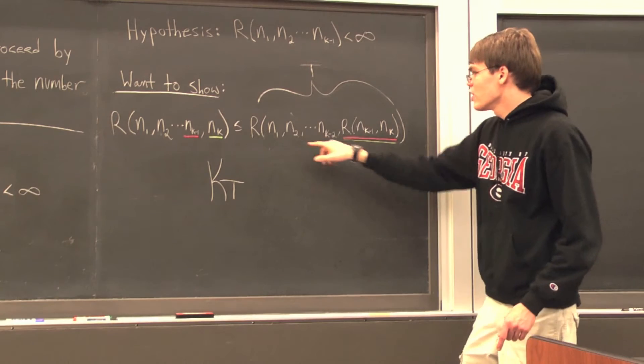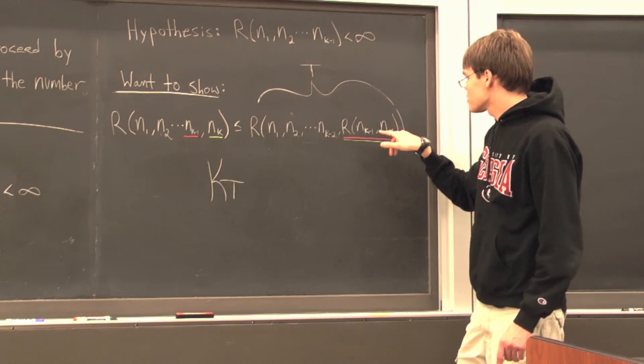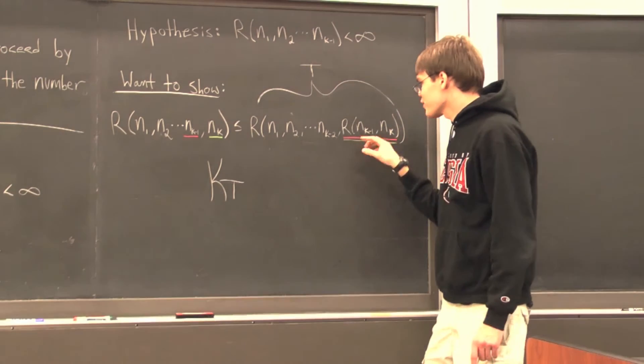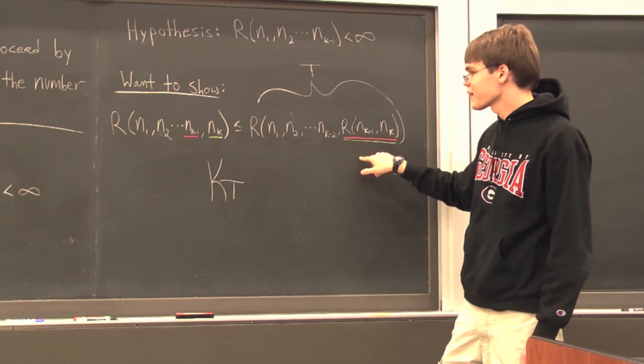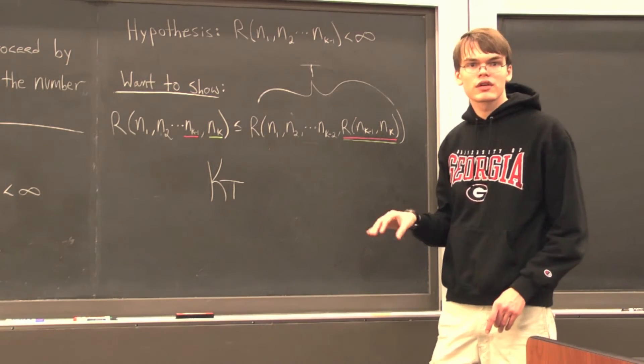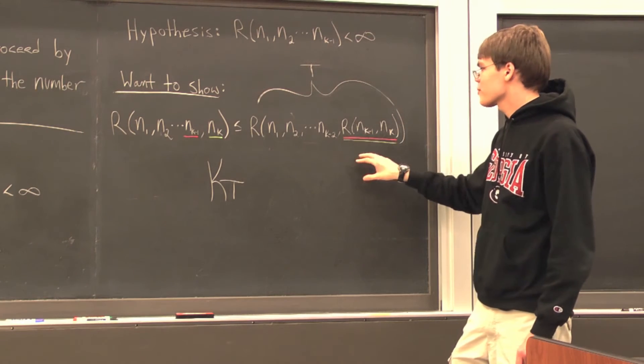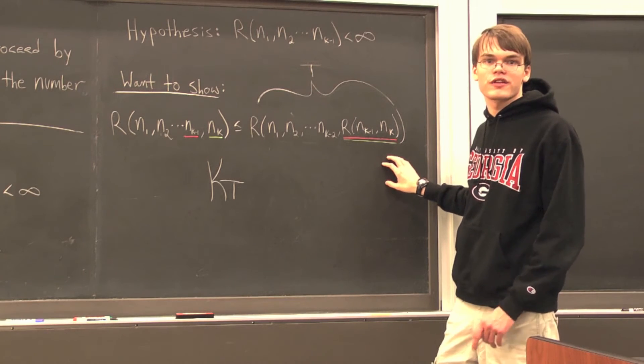Now, what if instead none of these first k minus 2 cases held, and the k minus 1 case held? Now, at this point, that means that we're guaranteed a monochromatic subgraph in kind of this blended colorblind color, we're guaranteed a monochromatic subgraph on r(nₖ₋₁, nₖ) vertices.